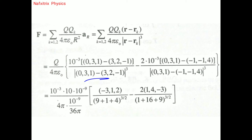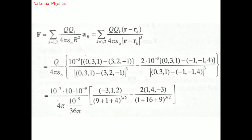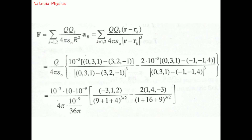Computing the displacement for the first charge: (0−3, 3−2, 1−(−1)) = (−3, 1, 2). Its magnitude is √(9 + 1 + 4) = √14. For the second charge: (0−(−1), 3−(−1), 1−4) = (1, 4, −3). Its magnitude is √(1 + 16 + 9) = √26.